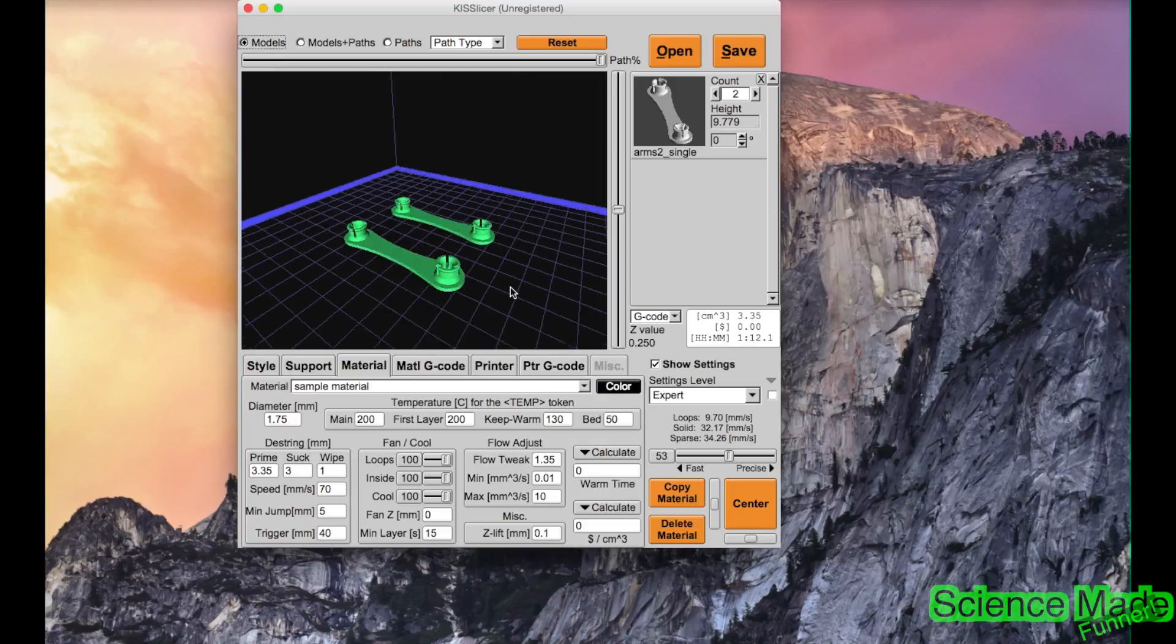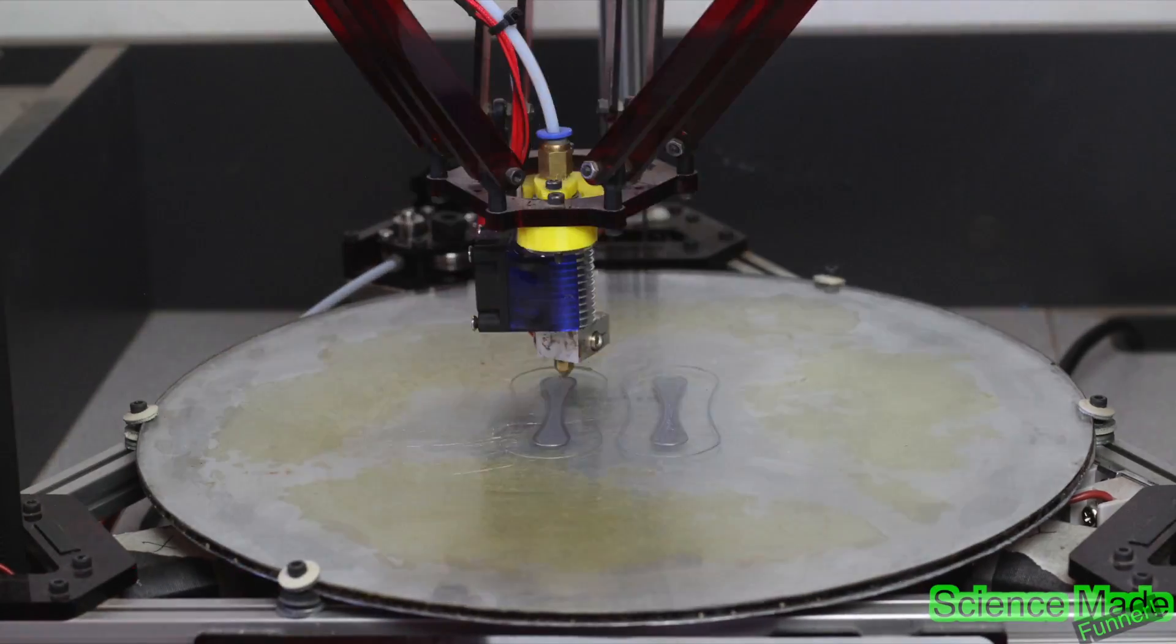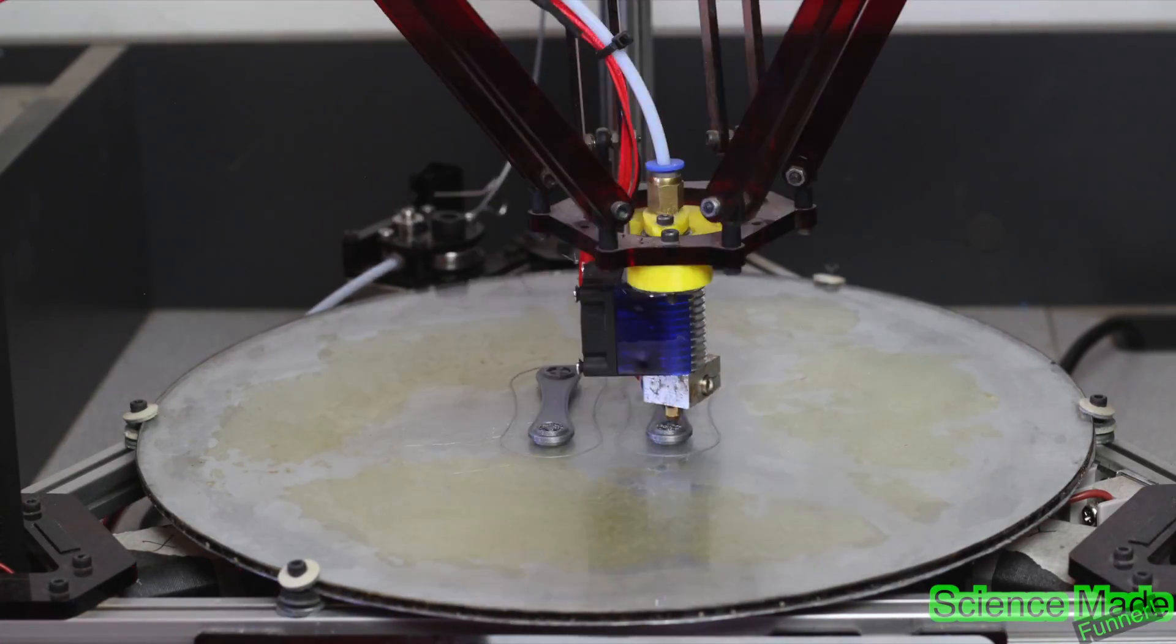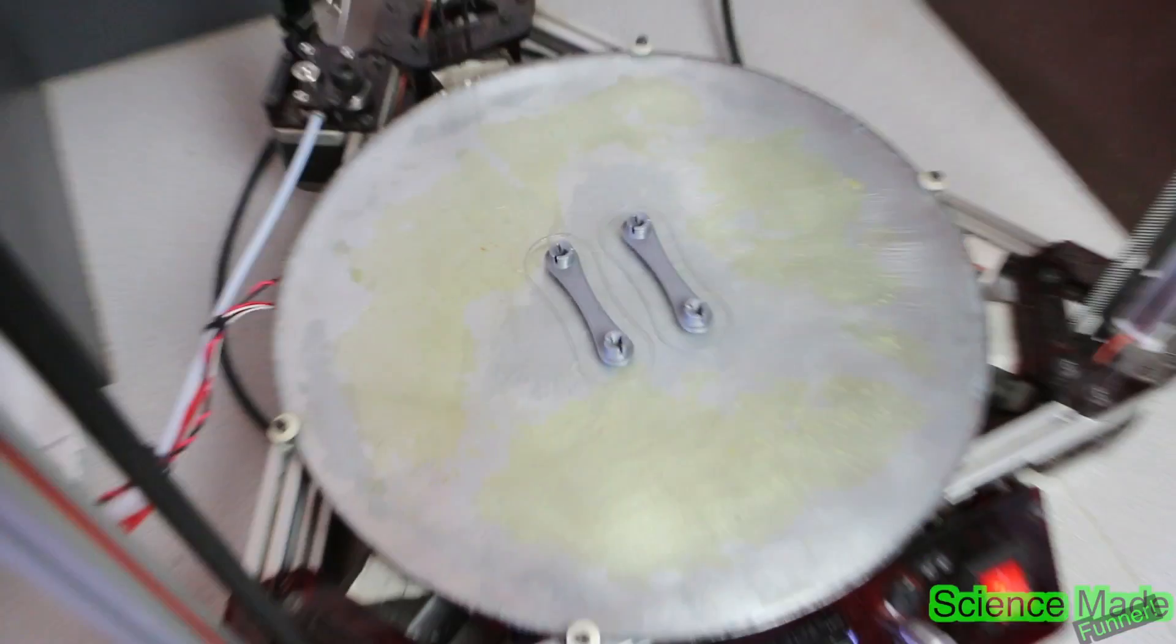All right, today we'll be 3D printing an elliptical gear. So we're 3D printing the arms first and then the gears. All right, so we'll go ahead and remove those from the board.